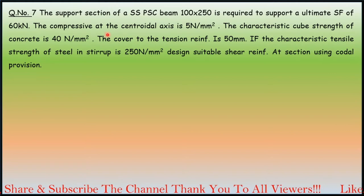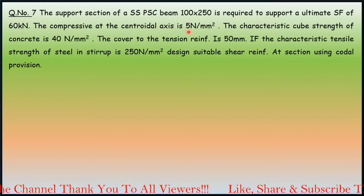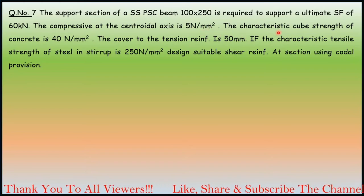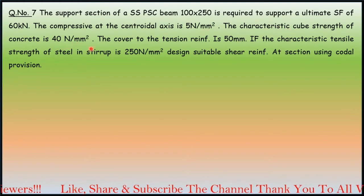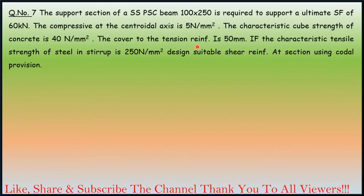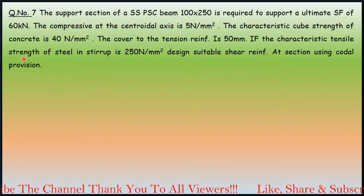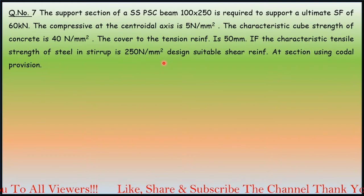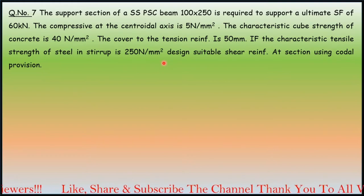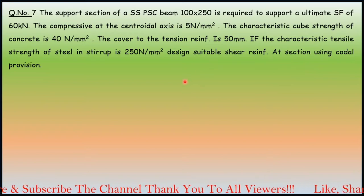The compressive stress at the centroidal axis is 5 N/mm². The characteristic cube strength of concrete is 40 N/mm². The cover to the tension reinforcement is 50 mm. If the characteristic tensile strength of steel in stirrup is 250 N/mm², design suitable shear reinforcement at section using codal provisions.